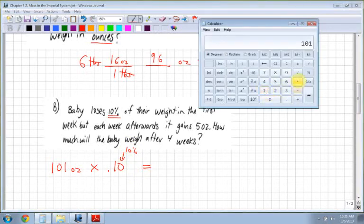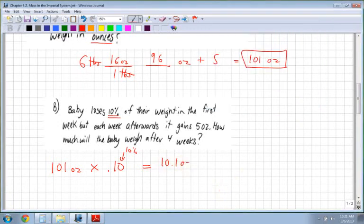Next thing I do is the multiplication, 101 times 0.1, and I get 10.1. Now that's ounces, and that's how much the baby loses. So I have 101 minus 10.1,